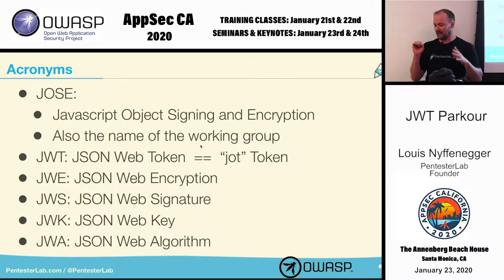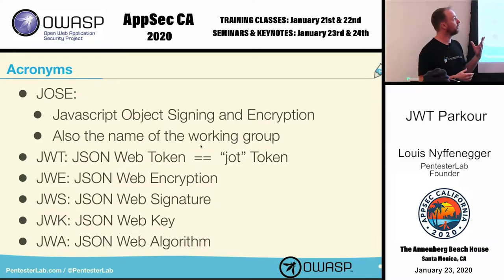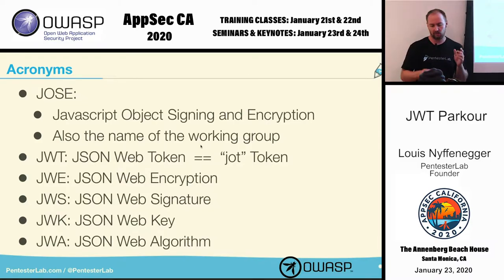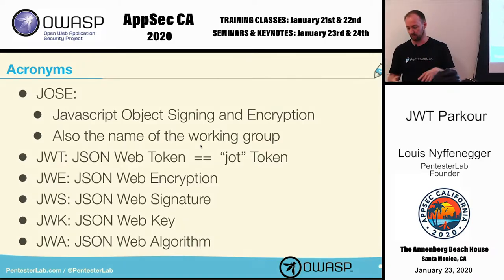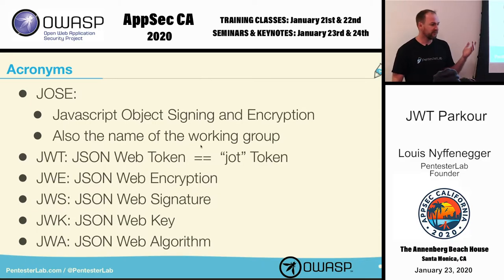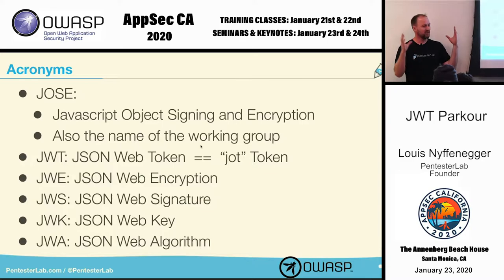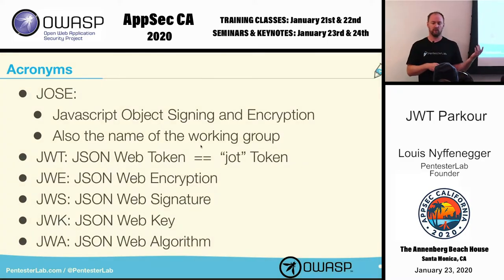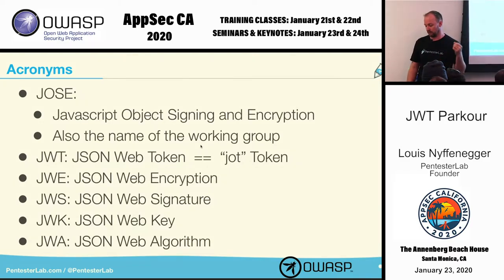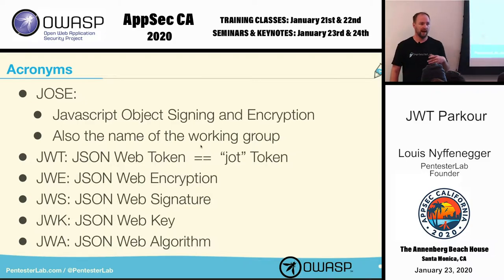Here are the acronyms I'm going to talk about. JOSE is the working group that created JWT — we should be thankful because they created something amazing for teaching applied crypto. JWT or JWT token is the common name for these tokens. You can talk about JWE for encrypted tokens or JWS for signed tokens. We'll also come across JWK for JSON Web Key and JWA for JSON Web Algorithm.